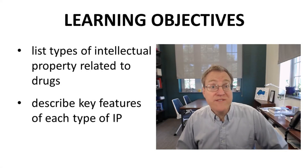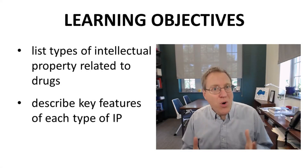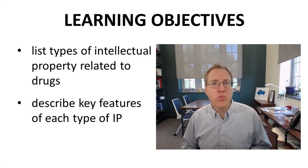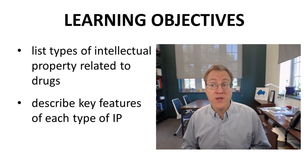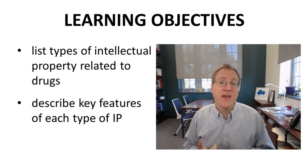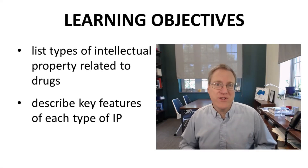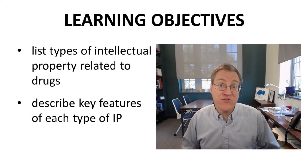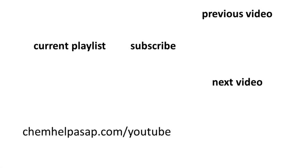We have now listed the most common types of intellectual property in the pharmaceutical industry — patents, trademarks, and trade secrets — and briefly described each. I hope you enjoyed this video on different types of intellectual property.